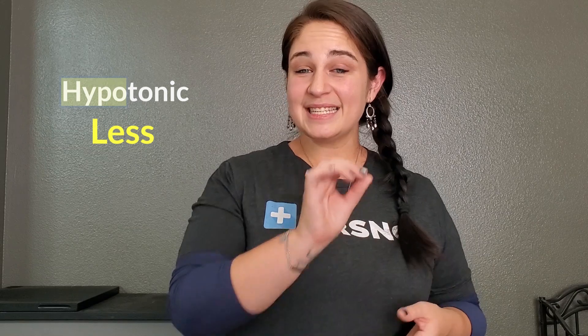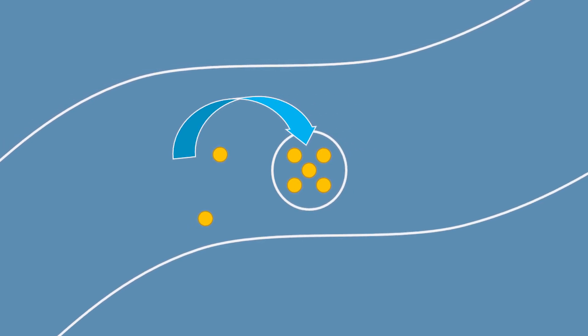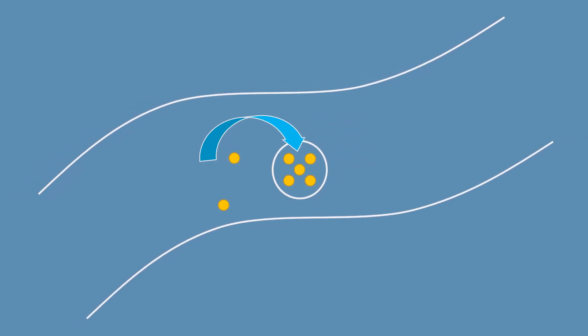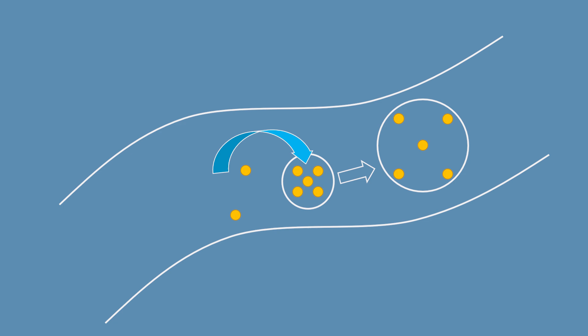Hypotonic solutions have less stuff dissolved in them, meaning they are more dilute than blood plasma. If I put a hypotonic solution into my bloodstream, I'll have more water outside my cells than normal, so the water is going to shift into the cells and the cells are going to swell. You might wonder why you'd ever give that — you're right that we'd never want to intentionally swell cells, as they can burst. But what if a patient had cellular dehydration, with cells already shrunken? Then it would be beneficial to give a hypotonic solution to restore normal hydration.